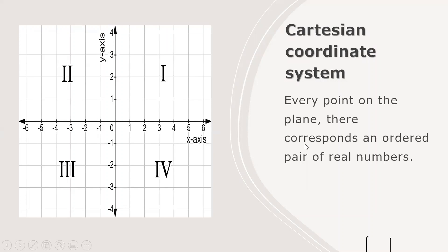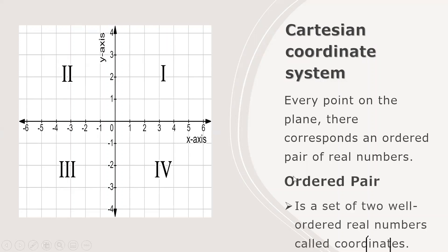Every point on the Cartesian plane corresponds to an ordered pair of real numbers. An ordered pair is a set of well-ordered real numbers called coordinates. The Cartesian coordinate plane is divided into four quadrants: Quadrant 1, Quadrant 2, Quadrant 3, and Quadrant 4.